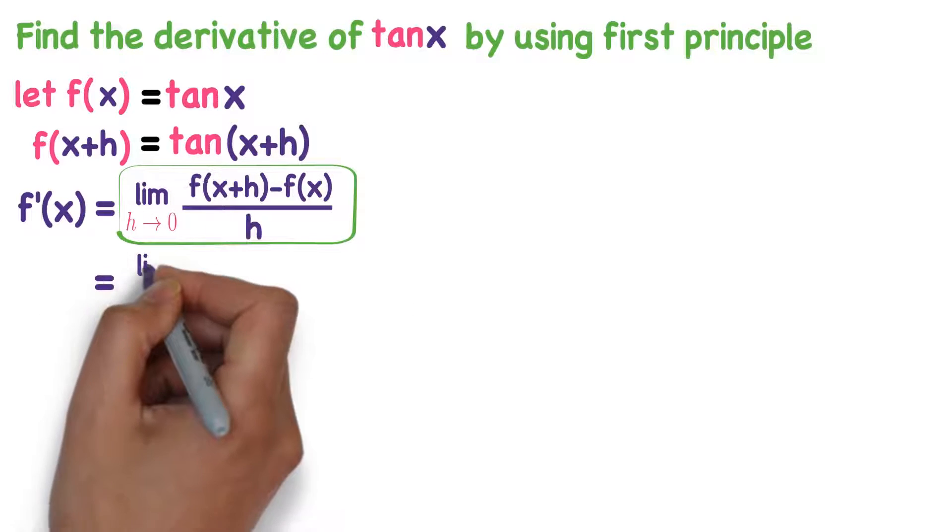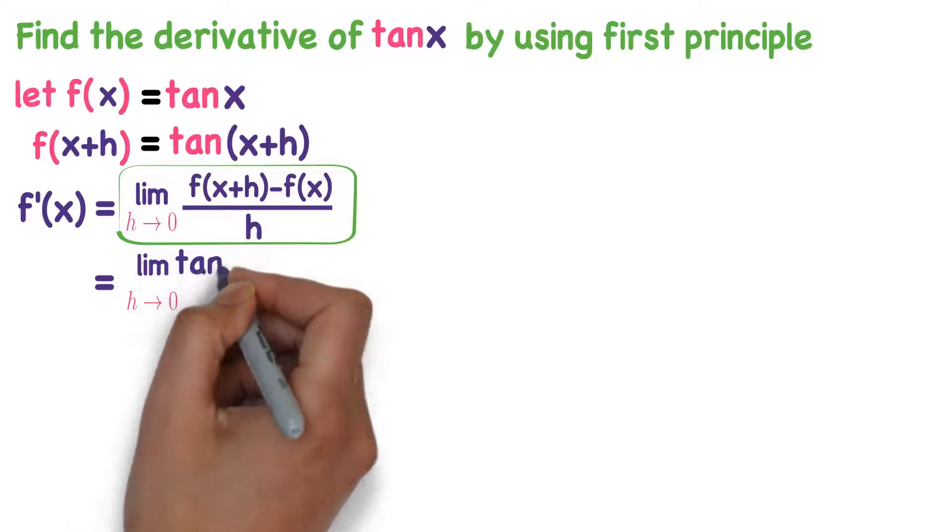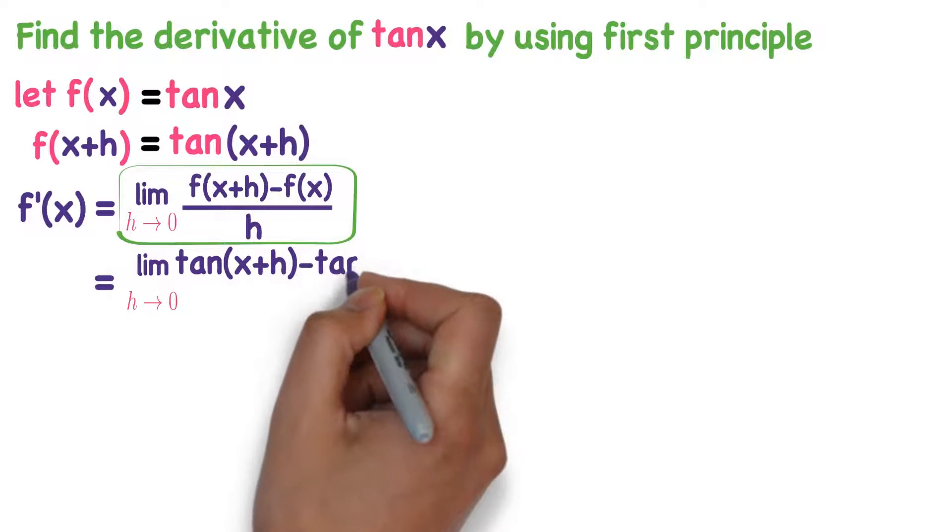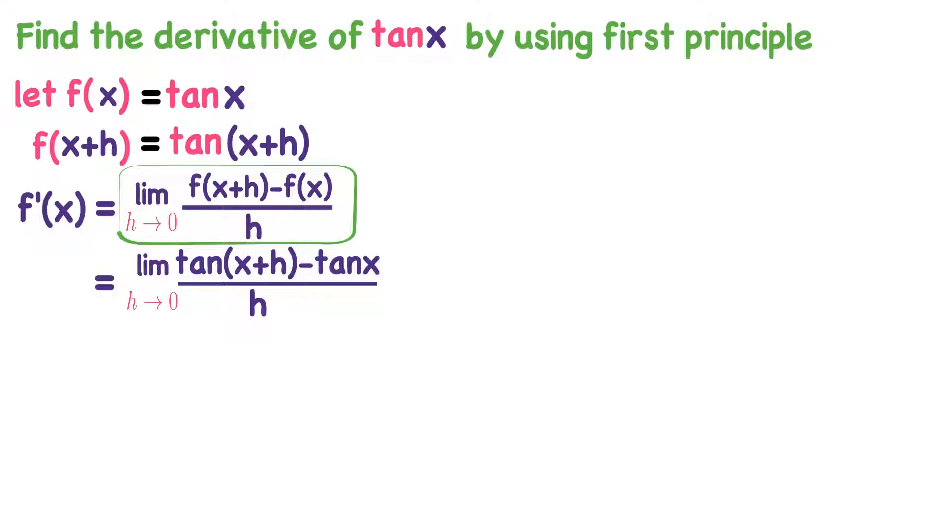Now substitute same thing in this formula. Limit h tends to 0, f(x+h) is tan(x+h) minus f(x) is tan x divided by h.